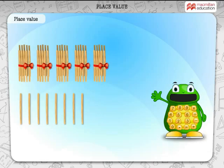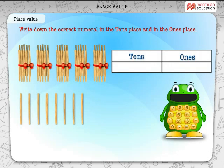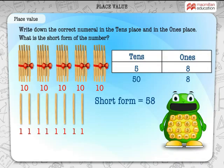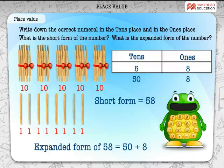Look at the bundles of sticks below. Write down the correct numeral in the tens place and in the ones place. What is the short form of the number? 58. What is the expanded form of the number? 58 is equal to 50 plus 8.